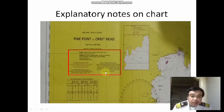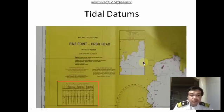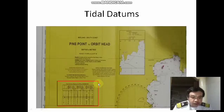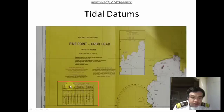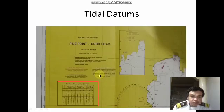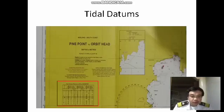We also have the tidal datums. You can see these magenta symbols — at those specific positions you can experience the slack as well as the ebb and flood current. Of course, this should be referenced with the tidal tide tables.